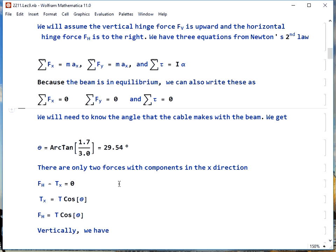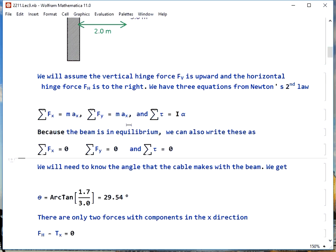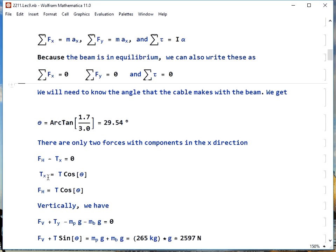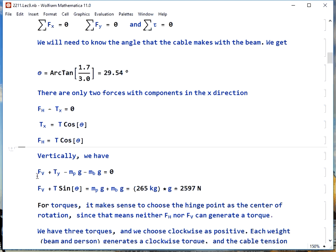If we look in the x direction, the only two forces that have components there are the hinge force and the tension, the x component of the tension. So Tx is T cosine theta. F hinge is therefore also equal to T cosine theta, since we just have the two.